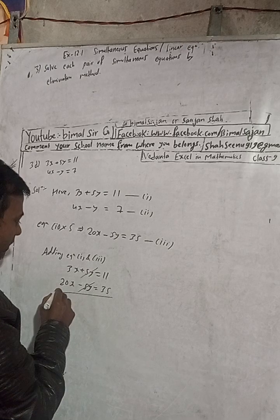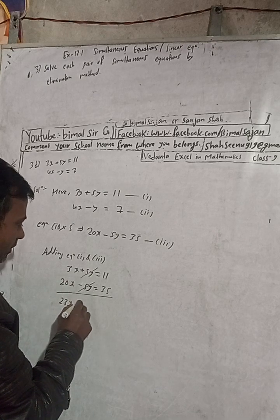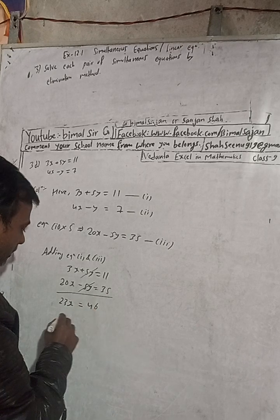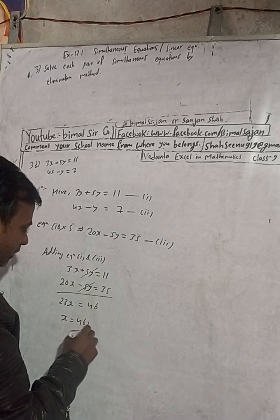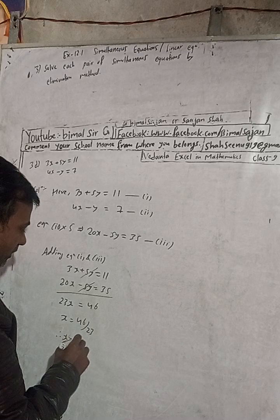Now this is here 20 plus 3, 23x is equal to 30, 40, 46. This is 46. So x is equal to 46 divided by 23. Therefore x is equal to 2.